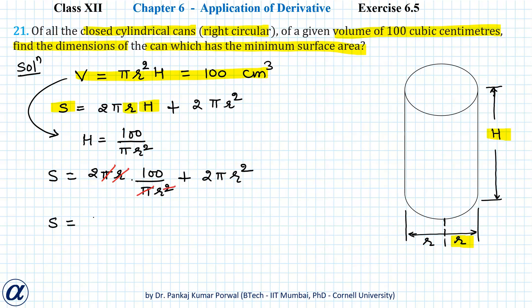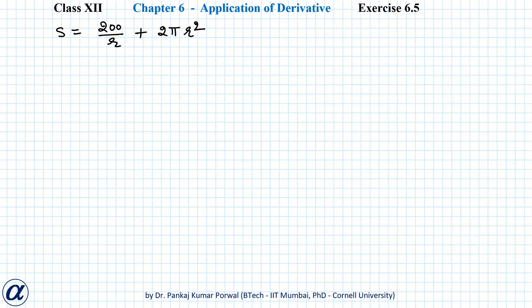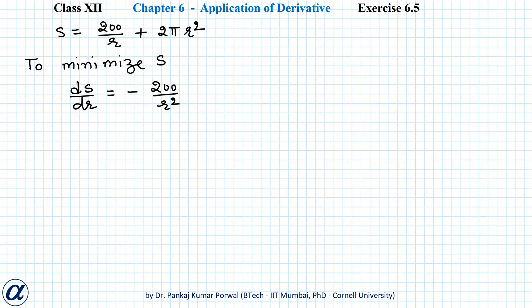So S equals 200/r + 2πr². To minimize the surface area we set dS/dr equal to zero. Therefore dS/dr equals −200/r² + 4πr = 0.